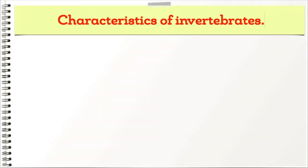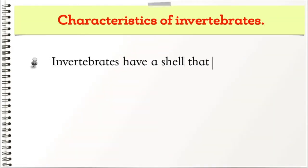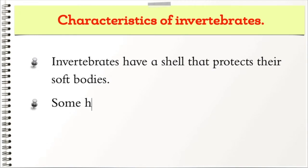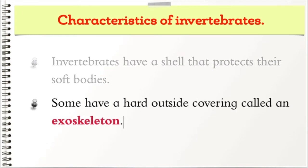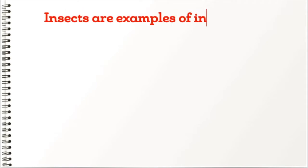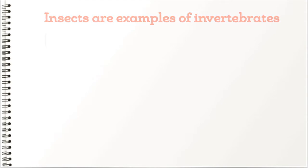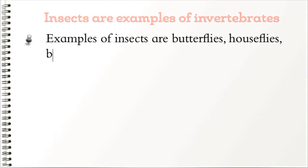Invertebrates have a shell that protects their soft bodies. Some have a hard outside covering called an exoskeleton. Insects are examples of invertebrates. Examples of insects are butterflies, houseflies, bees, fleas, mosquitoes, grasshoppers, weevils, and cockroaches.